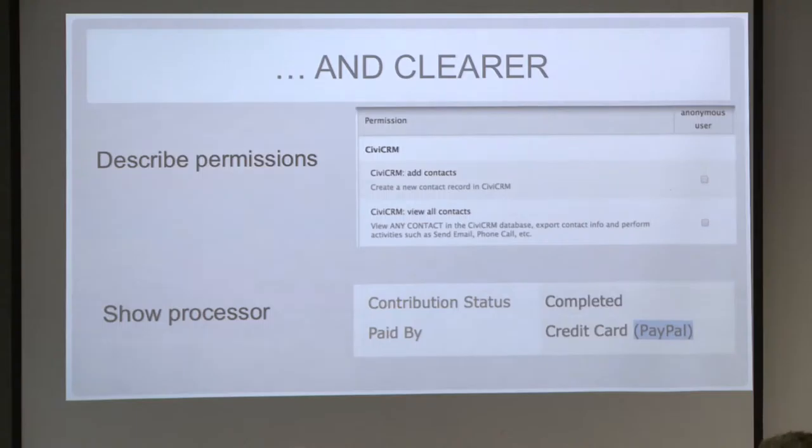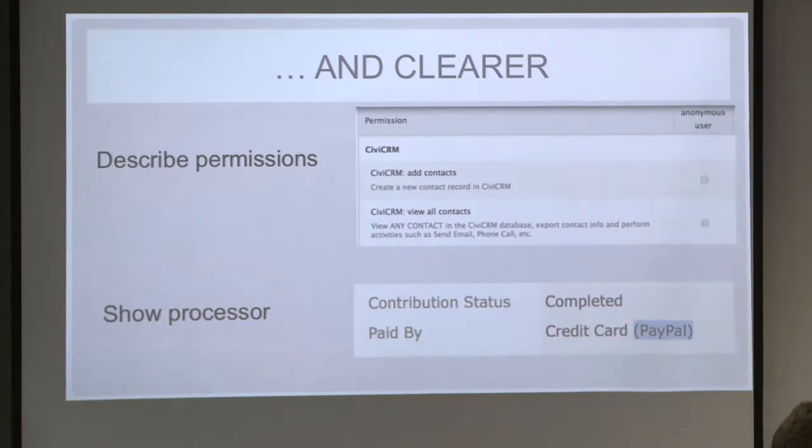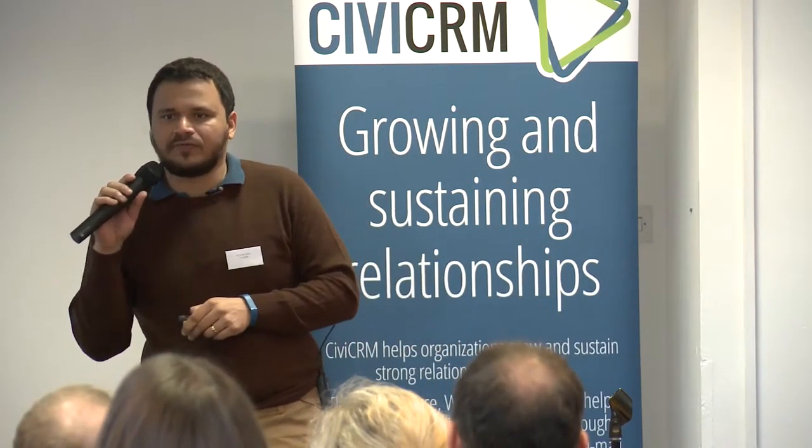Other improvements include a much clearer interface when you define a permission and what each is for, showing payment processes when available, better handling for decimal points — which was a big pain for some users — and showing various details about contacts. Any questions on 4.6?